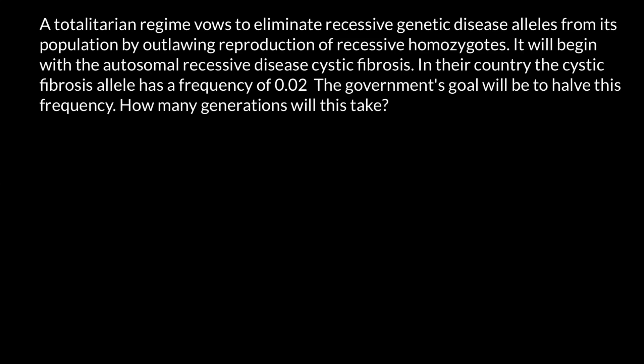Hello and welcome to Nikolai's Genetics Lessons. Today's problem: a totalitarian regime vows to eliminate recessive genetic disease alleles from its population by outlawing reproduction of recessive homozygotes. It will begin with the autosomal recessive disease cystic fibrosis. In their country, the cystic fibrosis allele has a frequency of 0.02. The government's goal is to halve this frequency. How many generations will this take?